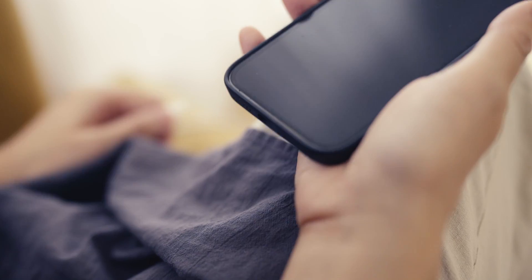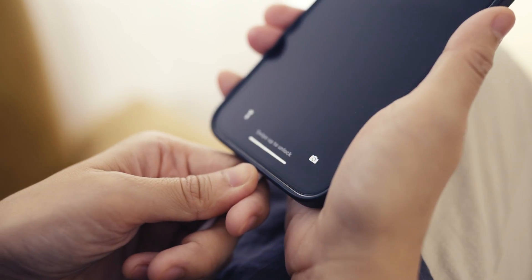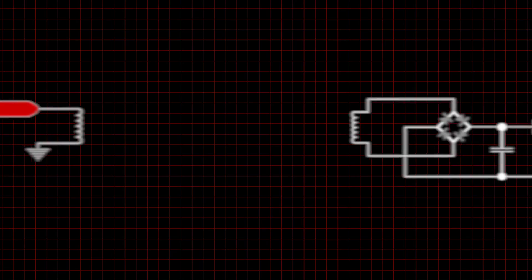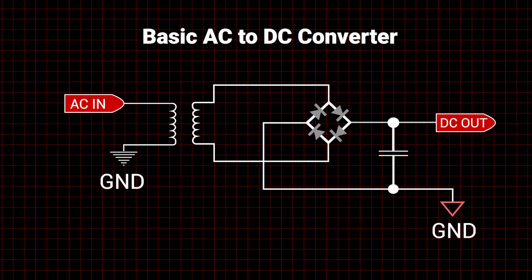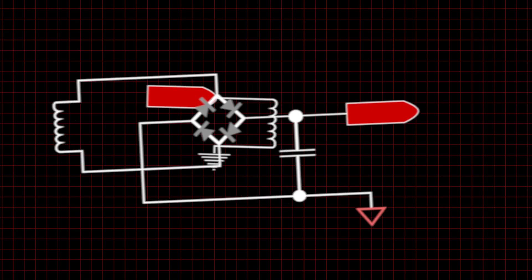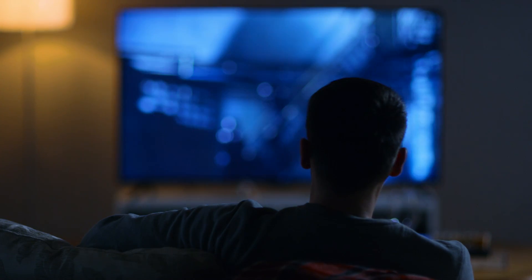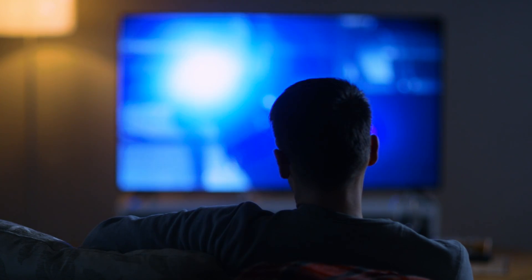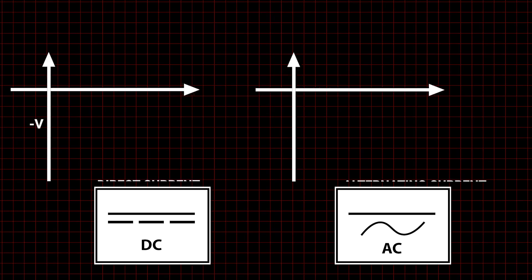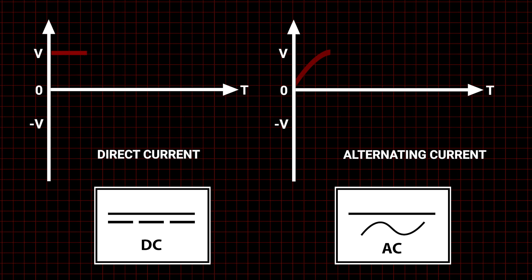But how is that possible when cell phones run on DC? Rechargeable batteries are often charged using an AC to DC converter. Similarly, some devices require more power for longer periods than batteries can provide. In those cases, AC to DC converters are also used.